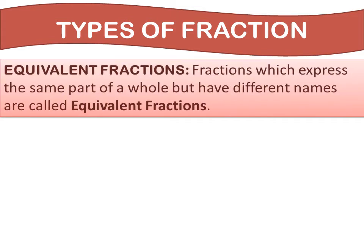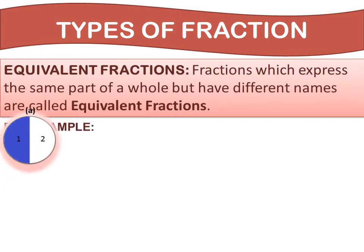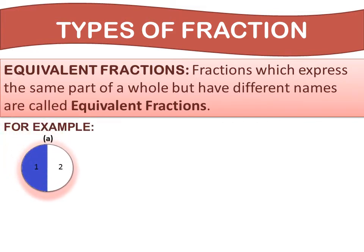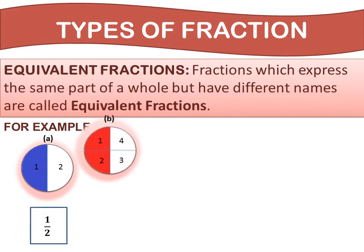Number 1, equivalent fractions. Fractions which express the same part of a whole but have different names are called equivalent fractions. For example, see the given circle. In figure A, the circle is divided into 2 equal parts, so each part is 1 half. So the fraction of the blue part is 1 upon 2.